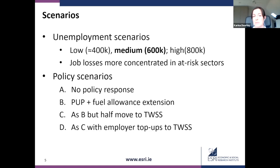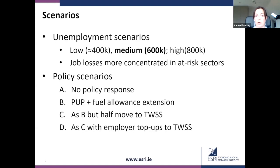What I'm going to present today is the results of the medium scenario — 600,000 people lose their jobs. In each scenario, we concentrate job losses more in at-risk sectors: retail, accommodation, and food service industries. Policy scenario A is no policy response — essentially, if the tax benefit system in place was that in place in February 2020, what would this unemployment shock look like in terms of exchequer impact and distribution of income? This just shows the scale of income losses if there had been no targeted policy response.